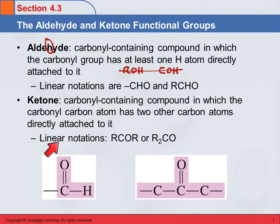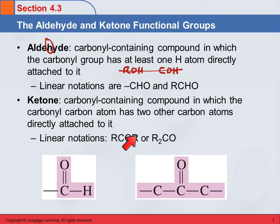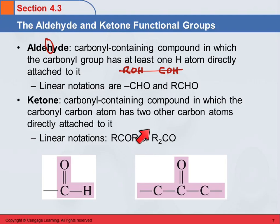Linear notations for the ketone: maybe RCOR, where the oxygen is bonded to the carbon and an alkyl group is also bonded to it. Or sometimes written as R₂CO — this would be if those R groups are the same. They could be the same, or they could be two different R groups.